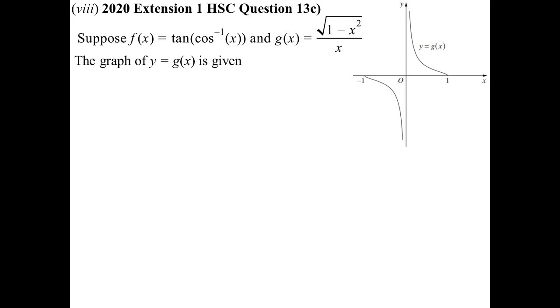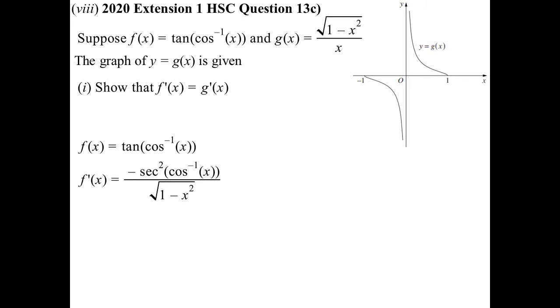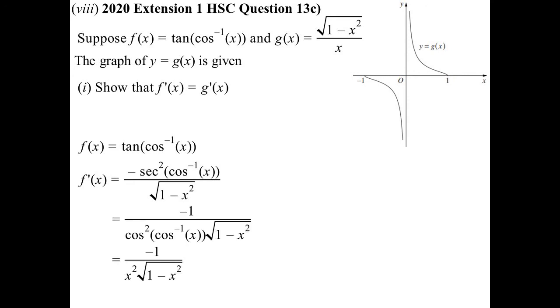Last year's HSC question on the same theme: f(x) = tan(arccos x) and g(x) = √(1 − x²) / x, with the graph of g(x) provided. Show that the derivatives of both functions are the same. For f(x): differentiating tan, I multiply by the derivative of the angle. The angle is inverse cos x, whose derivative is minus 1 over the square root of 1 minus x squared. Tan becomes sec squared, and the angle does not change. The reciprocal of sec is cosine, so on the bottom I put cos squared of arccos x. And cos of arccos x is x, so that becomes minus 1 over x squared times the square root of 1 minus x squared.